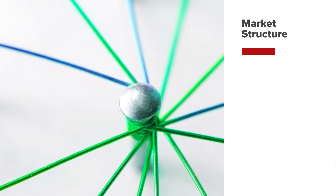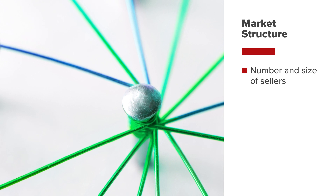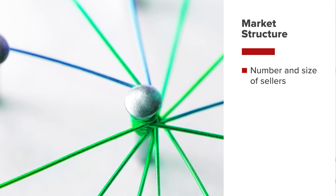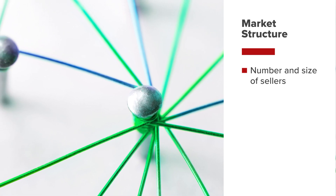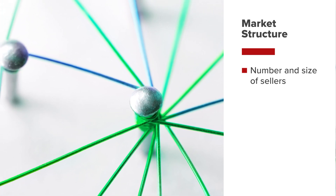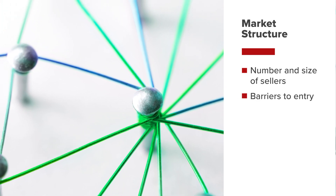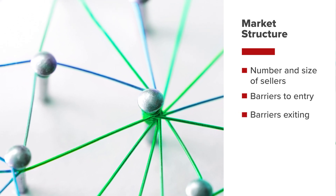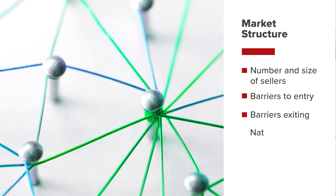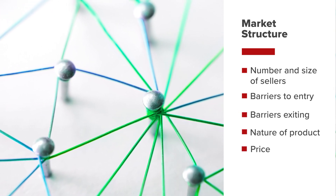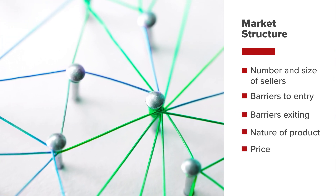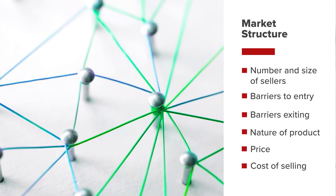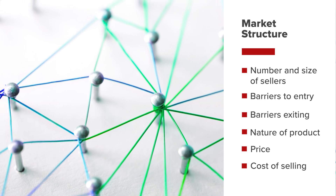Market structure is therefore a function of the number and size of sellers of a particular good, barriers to entry and barriers to exiting the market, the nature of the product, its price, and the cost of selling.